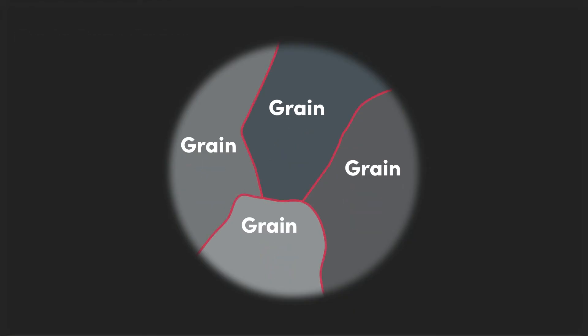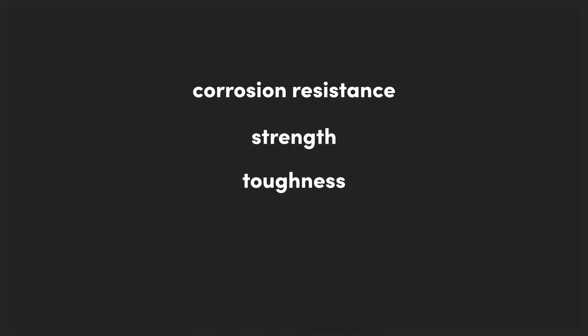The grain structure or microstructure of a material can influence its physical properties including corrosion resistance, strength, toughness, ductility, and hardness. These properties help determine how the material will perform in a given application.